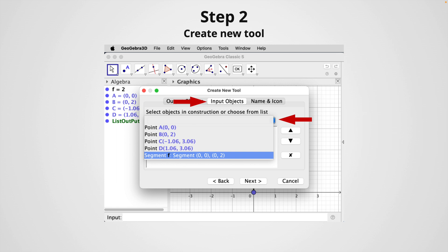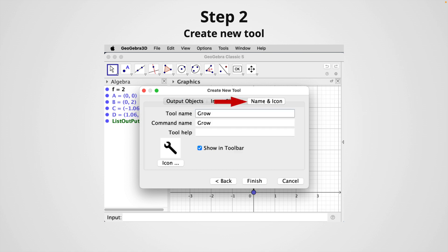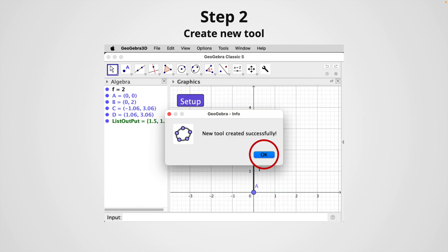Then in the input objects tab, select original segment F, click on next. Then in the name and icon tab, you have to input the name of the tool. In this case, I type Grow with capital G and click on finish to create your new tool. You will see this new window popping up and it indicates that you have created successfully your tool.